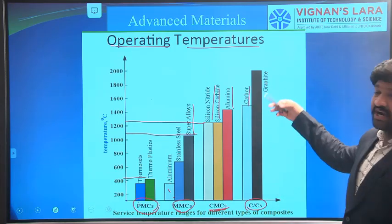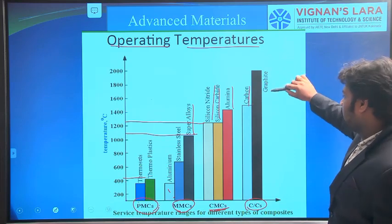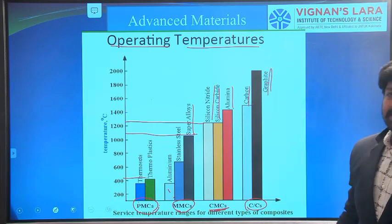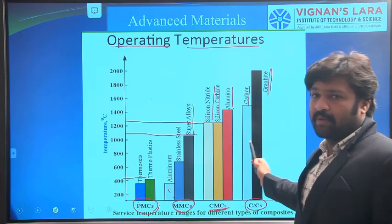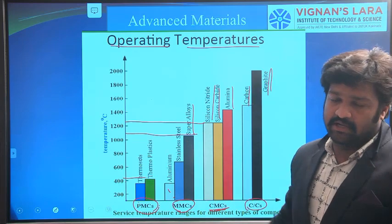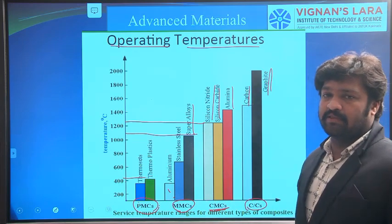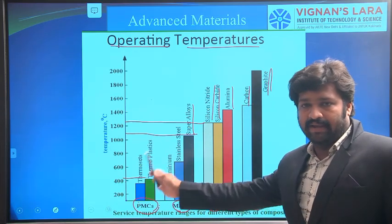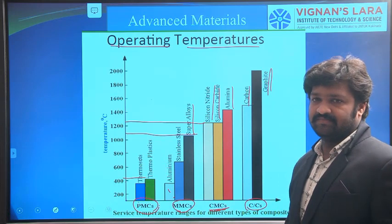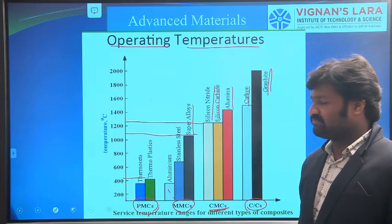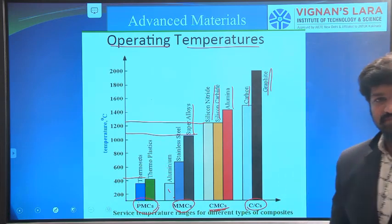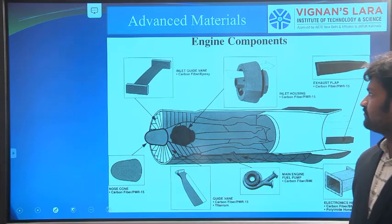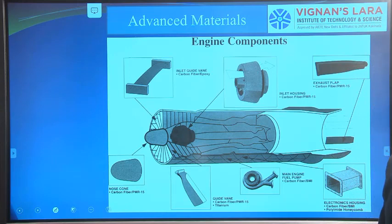If temperatures go beyond the ceramic range, we go for graphite. This illustrates that depending upon the operating temperature, we can select different materials appropriate for that application.